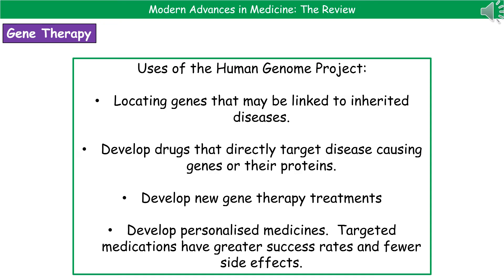One of the biggest recent advances has been the completion of the Human Genome Project. The information gained from it has opened up a whole range of medical advances. We can now locate genes linked to inherited diseases. We can develop drugs that directly target disease-causing genes or their proteins. We can develop new gene therapy treatments to replace faulty alleles with healthy alleles. And finally, we can develop personalized medicines — targeted medications with much greater success rates and fewer side effects than regular medications.